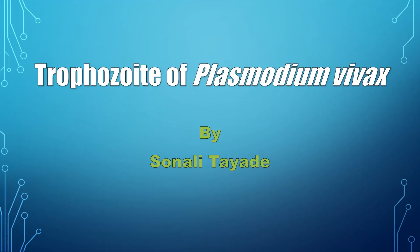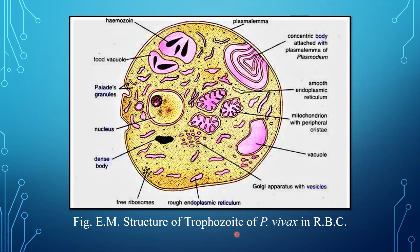Today we will discuss the trophozoite of Plasmodium vivax. The trophozoite is the matured adult stage of Plasmodium vivax, and it is present in the red blood cells of the host.